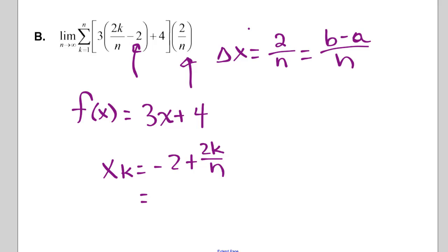Then we're going to do a plus delta x times k. So the 2 over n is our delta x, we see the k. So that leaves us with a has to be negative 2.